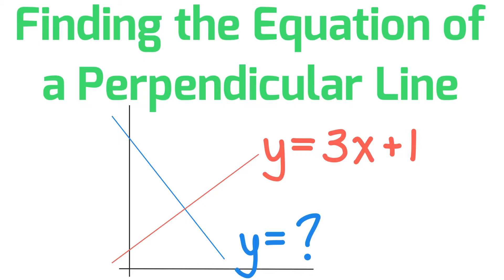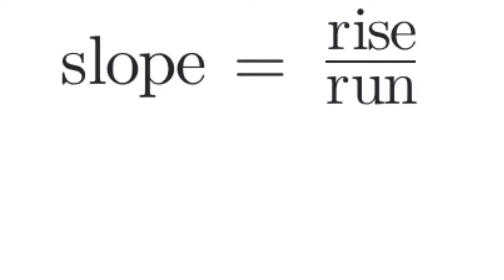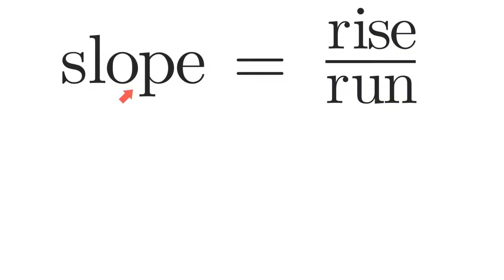In this video I'll teach you how to find the equation of a perpendicular line. The formula for the slope of a straight line is rise divided by run.